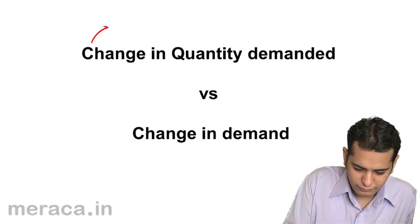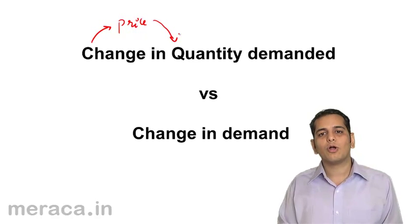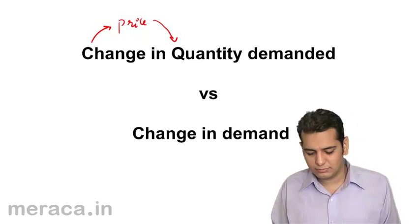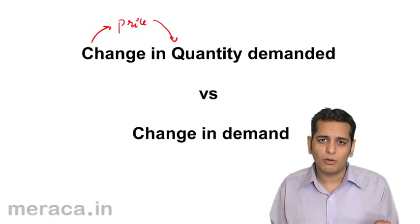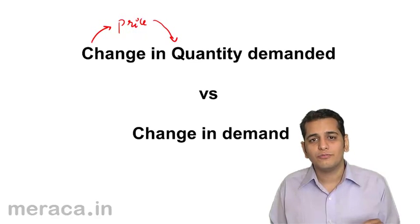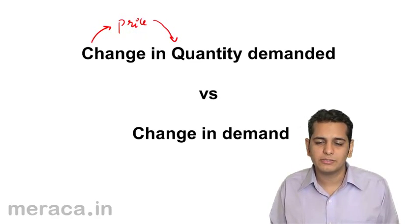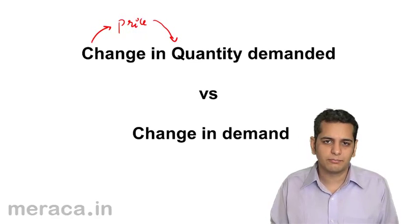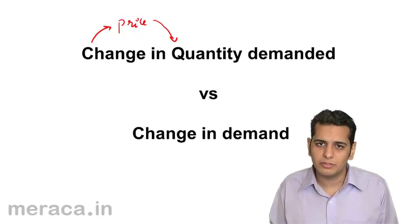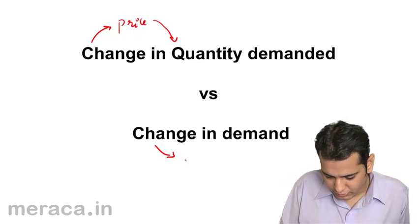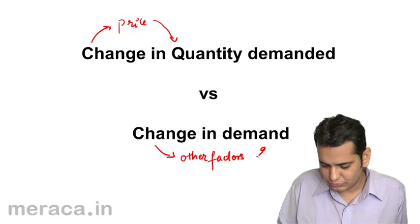Where the change is brought about by price, it becomes change in quantity demanded. Change in demand, on the other hand, is when demand altogether is changing — the quantity bought of that commodity is altogether changing because of other factors, like change in income levels, change in the price of related commodities, change in habits, tastes, and preferences, and other factors like size of population and distribution of income. When the change is brought about by these other determinants of demand, we call it change in demand.